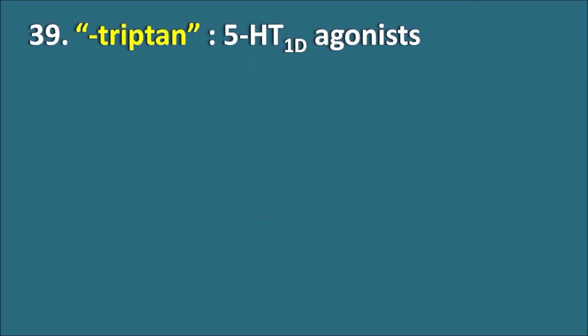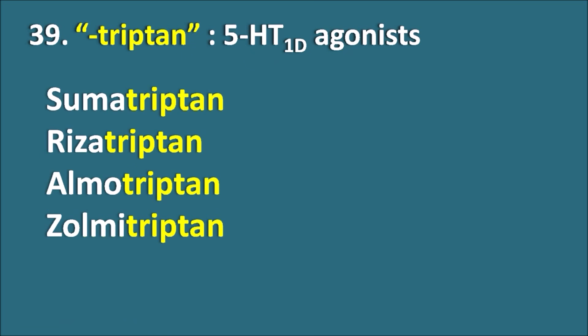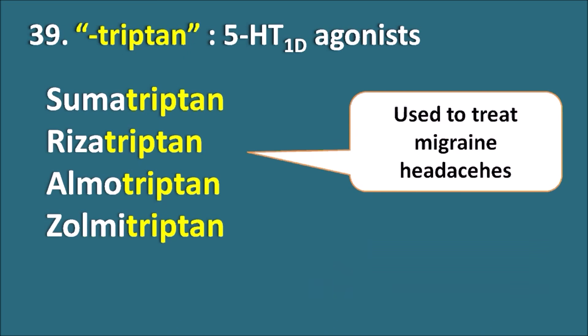Thirty-ninth, the suffix '-triptan' indicates they are 5-HT1D agonists. Drugs like Sumatriptan, Rizatriptan, Almotriptan, and Zolmitriptan are all 5-HT1D agonists. These drugs are used in the treatment of migraine headaches.